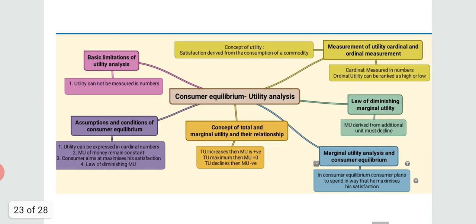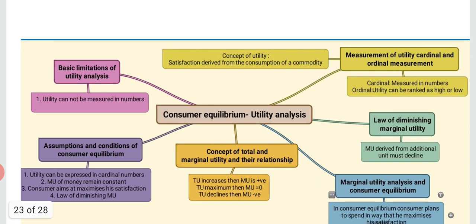Look at this mind map. We have already covered the concept of utility, cardinal and ordinal measurement of utility, law of diminishing marginal utility, marginal utility analysis, consumer equilibrium for one and two commodities, and the concept of total and marginal utility and their relationship. Today we will cover the last two topics of the chapter.